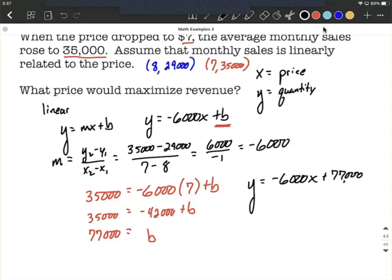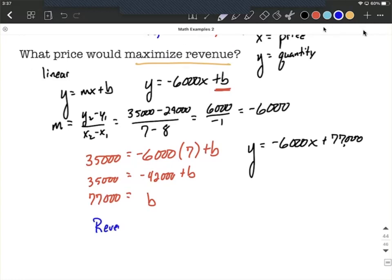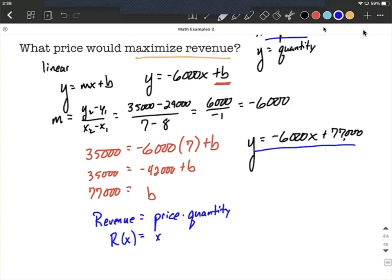This means our demand function is y equals negative 6,000 times x plus 77,000. But we're trying to maximize the revenue, so we need to represent the revenue. The revenue is always price times quantity. So in our case, R of x equals our price, the x value, times the quantity, which is negative 6,000x plus 77,000.